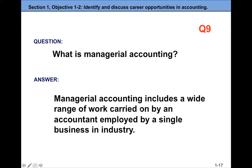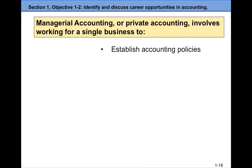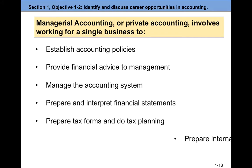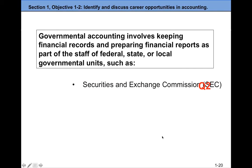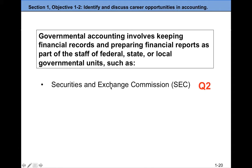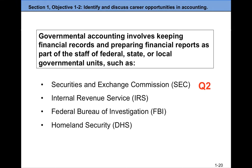In managerial accounting, you work for a specific company in the industry in their accounting department. These are the different services that managerial accountants provide. In governmental accounting, you prepare financial reports and keep financial statements for a federal, state, or local government unit. Government agencies that employ many accountants include the Securities and Exchange Commission — the SEC — which oversees all public corporations. All public corporations must file their financial statements with the SEC. The SEC appoints a board called FASB, the Financial Accounting Standards Board, which develops accounting rules and policies called GAAP. Other agencies include the IRS, FBI, and DHS.